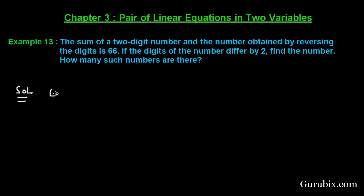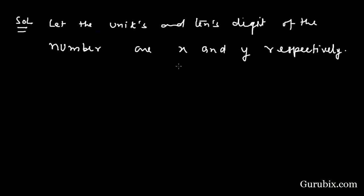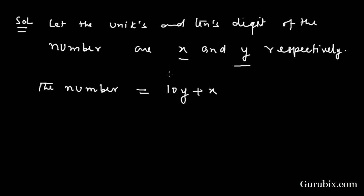First of all, we shall let the units digit and tens digit of the number be X and Y respectively. This means the unit digit is X and tens digit is Y. Therefore the number can be written as 10Y plus X, because it is a two-digit number, and this is the general form of a two-digit number.